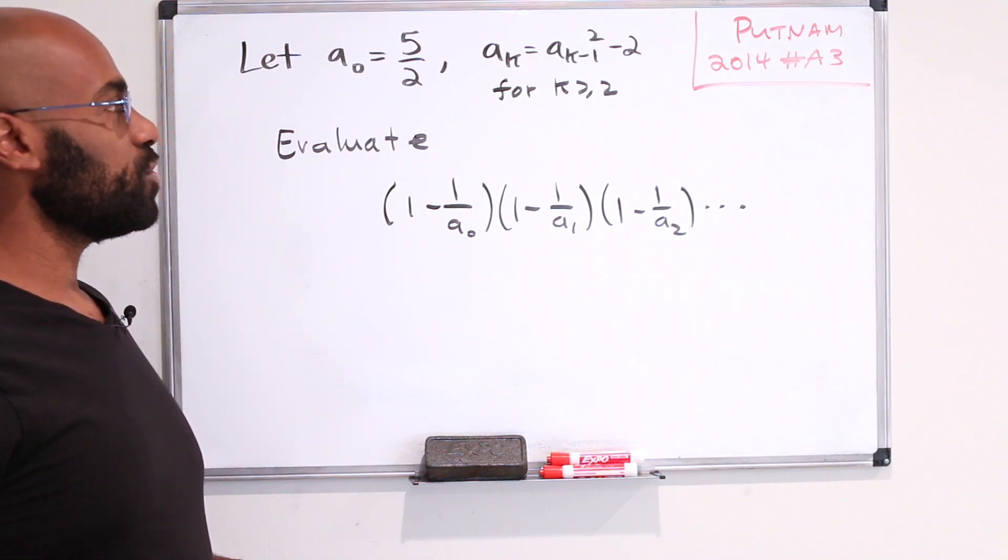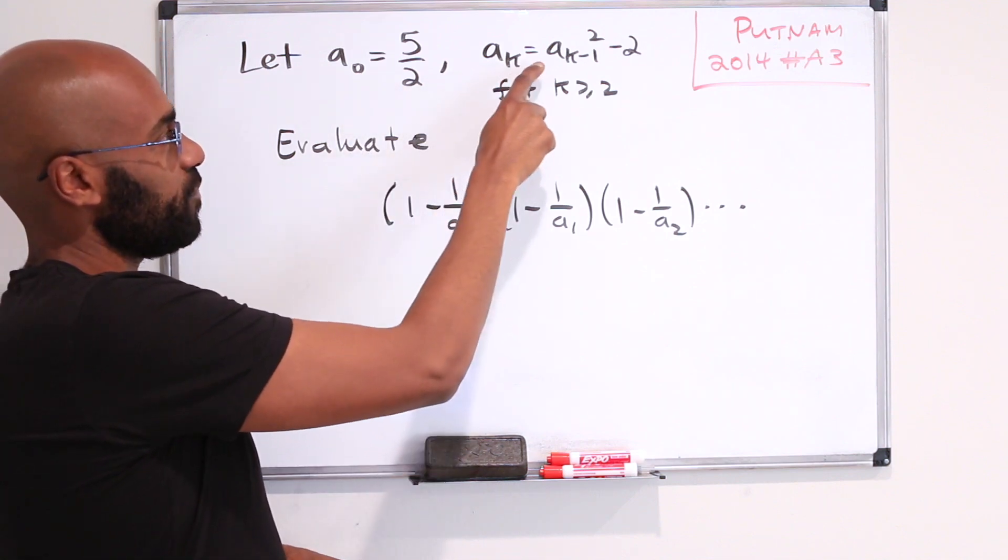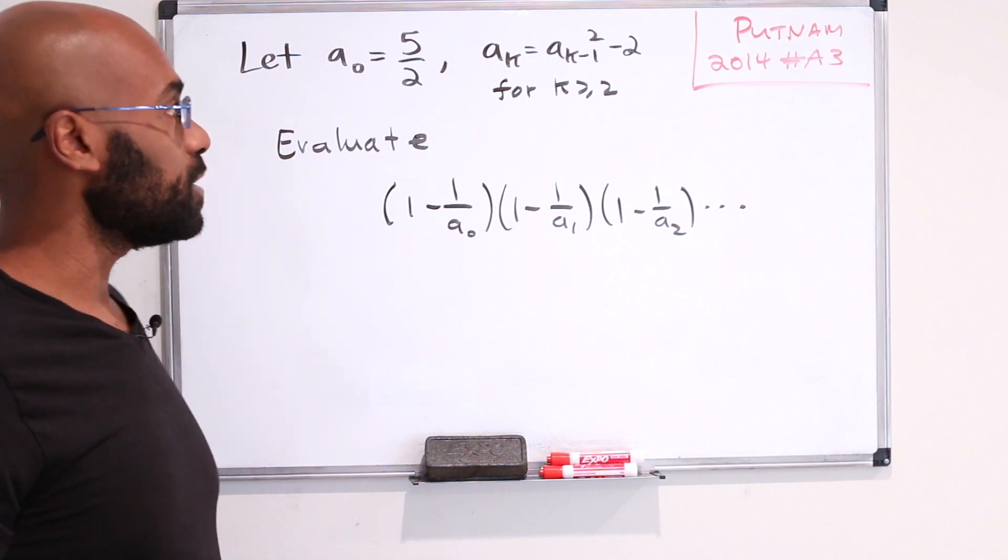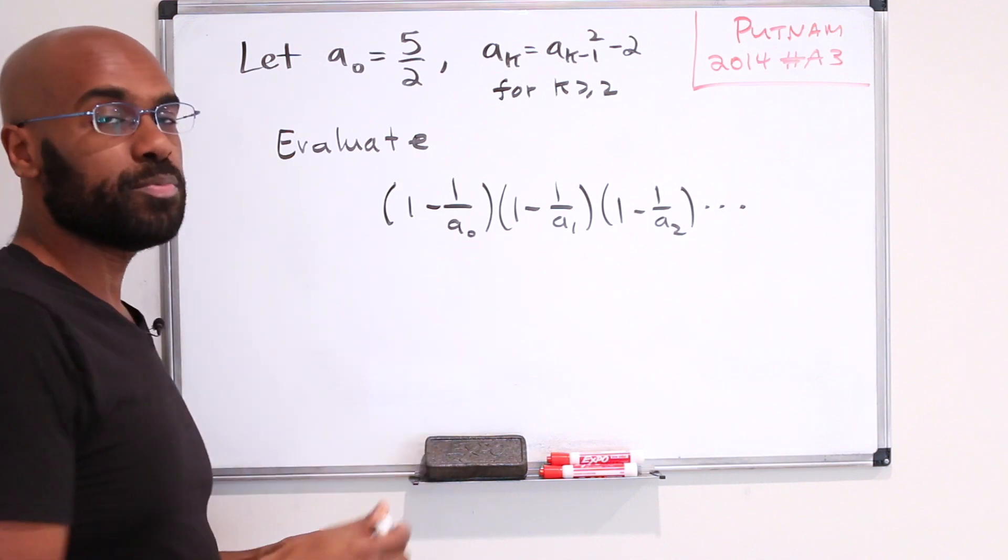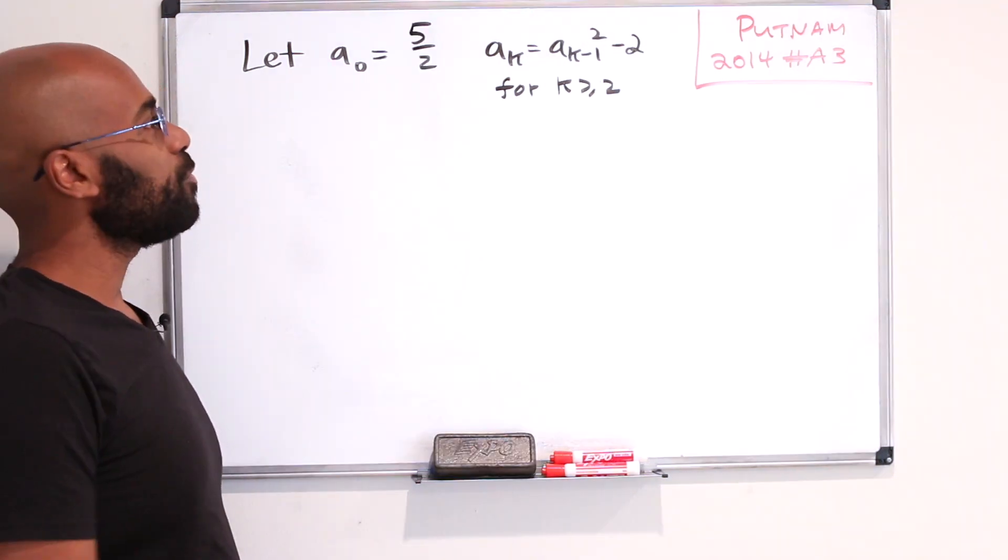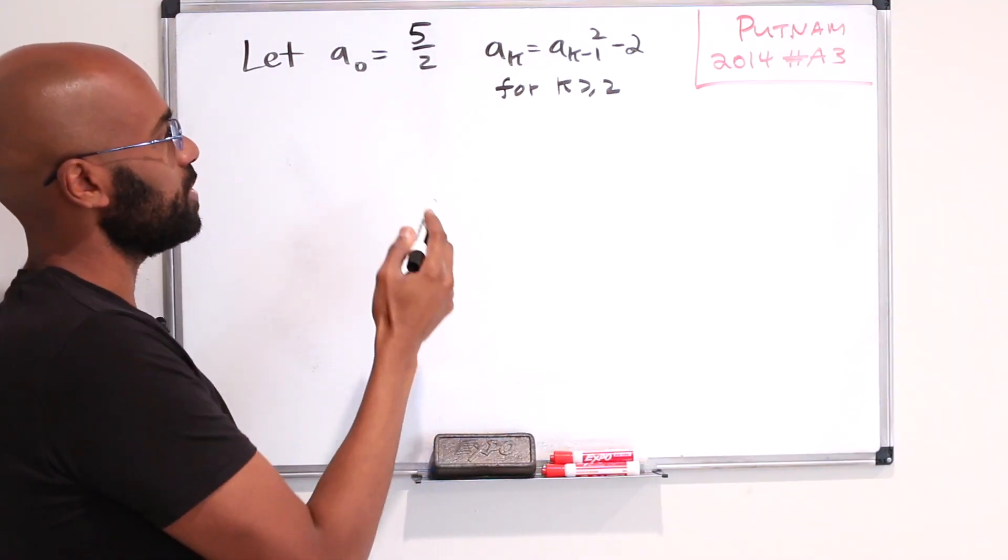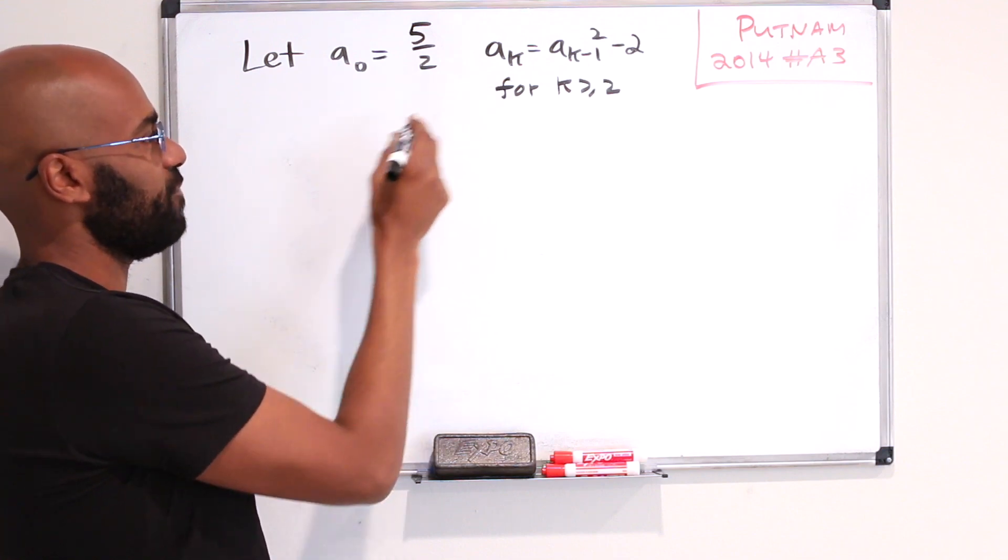So the way we're going to go about this is first play around with the first few elements of this sequence just to get a sense of what the sequence looks like before we actually try to compute this infinite product right here. Let's start up with playing with the recurrence here and seeing what values we actually get for a_k.